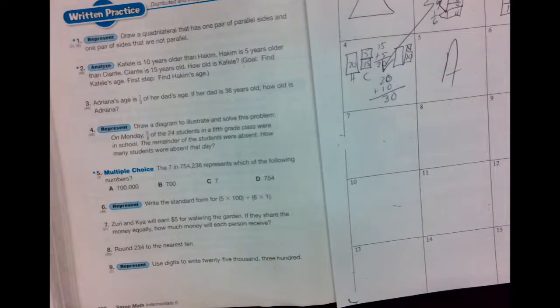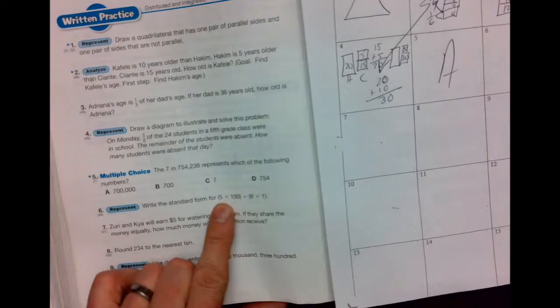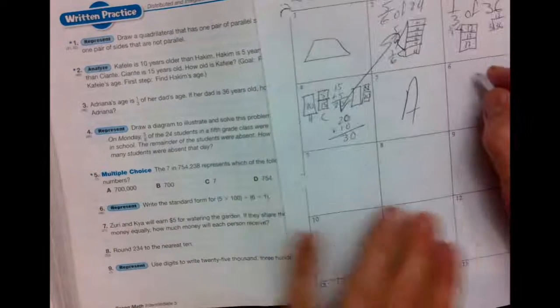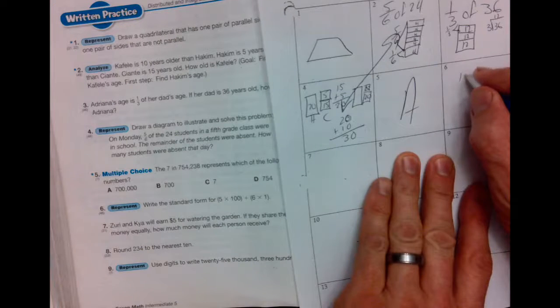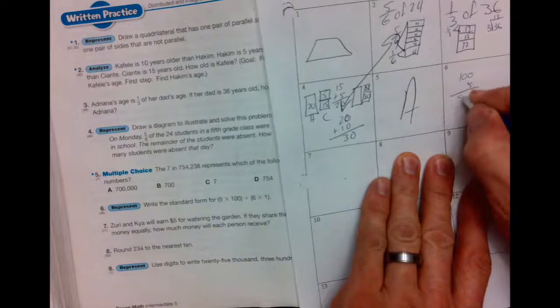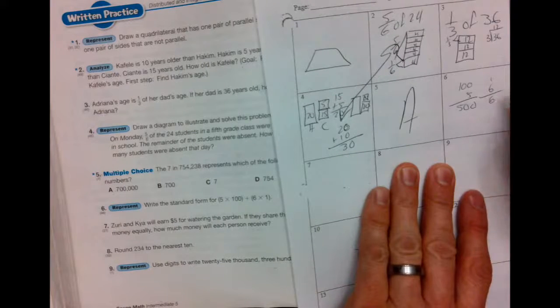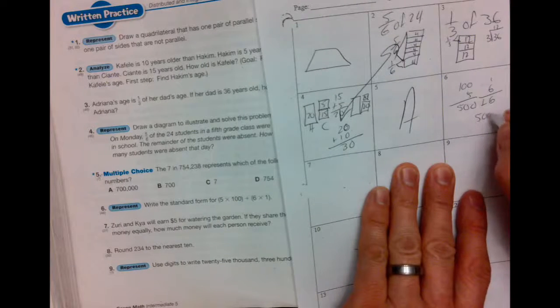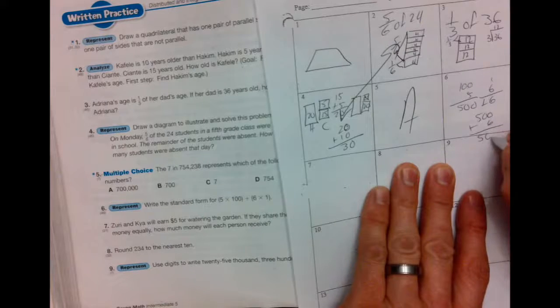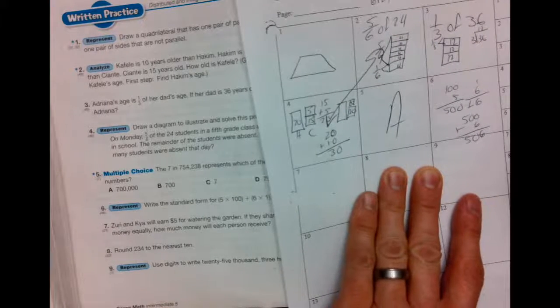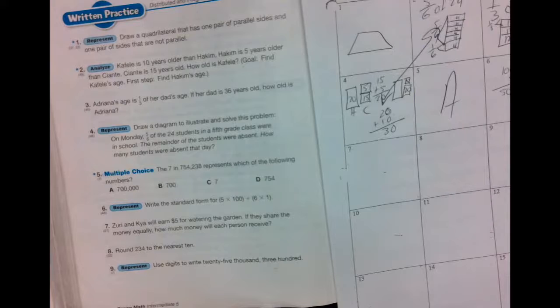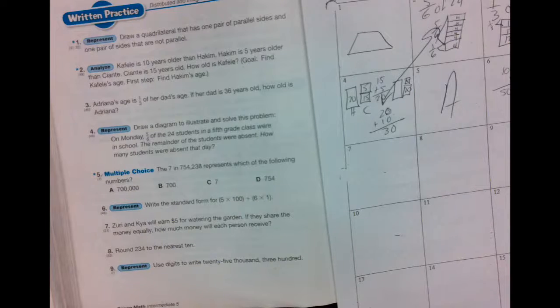Six, write the standard form. Now we're just going to take the face times the place. So you've got five hundred-dollar bills, which would give you five hundred. And you've got six one-dollar bills, which would give you six. And five hundred plus six is five hundred and six. But we are cruising.